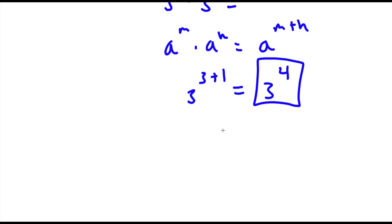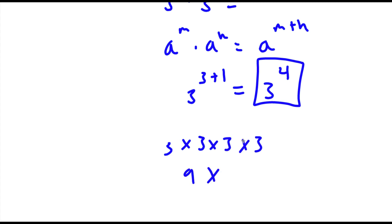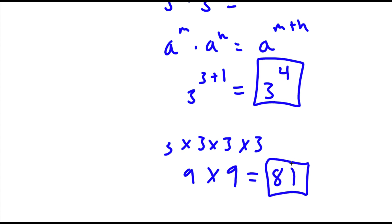And 3 to the power of 4 — let's simplify this. This is the same thing as 3 times 3 times 3 times 3. 3 times 3 is 9, times again 3 times 3 is 9. So you have 9 times 9, which is equal to 81. So that is our answer.